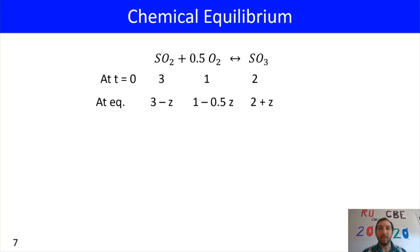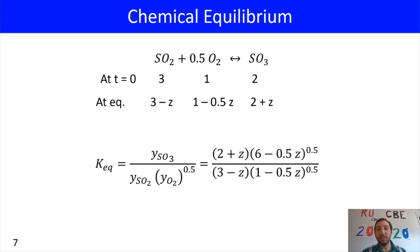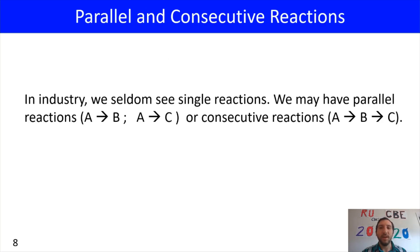Now we move on to parallel and consecutive reactions. In industry, we seldom see a single reaction. We may have parallel reactions, where A goes to B and A also goes to C. Or we may have consecutive reactions, where A goes to B and then B goes to C. That makes things a bit more tricky, and we'll go through a practice problem.